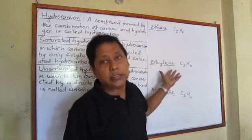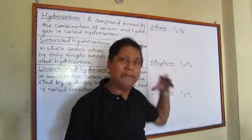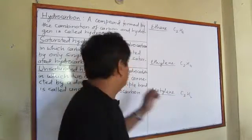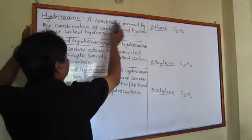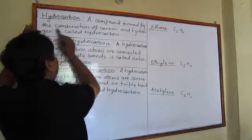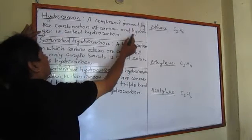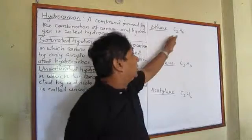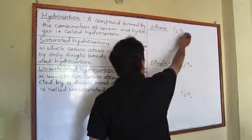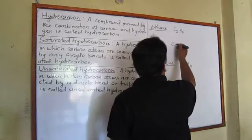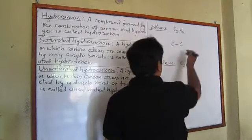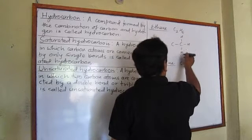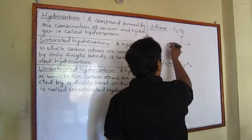There are hundreds of hydrocarbons, but in every hydrocarbon, carbon combines with hydrogen. That's why we can define it this way: a compound formed by the combination of carbon and hydrogen is called a hydrocarbon.